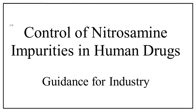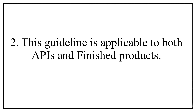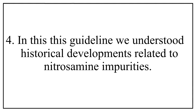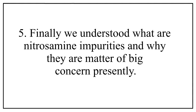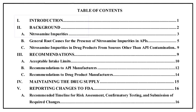That is it for today's video. Let us quickly recall the key learnings: the current guideline on Nitrosamine impurities was published by FDA in February 2021, with a previous version published in September 2020. The guideline is applicable to both finished products and APIs, explains how Nitrosamine impurity formation takes place, and covers historical developments and the nature of Nitrosamine impurities and why they are a major concern. We will cover the remaining parts of this guideline in the next video. Bye-bye and happy learning.